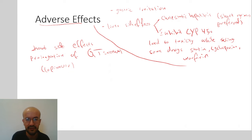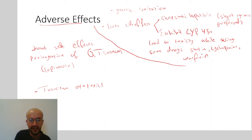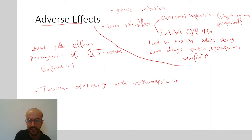QT prolongation worsens with other torsadogenic drugs. There is also transient ototoxicity associated with azithromycin and erythromycin.